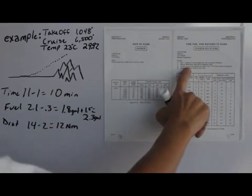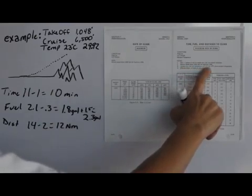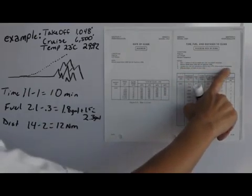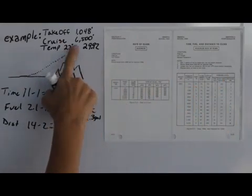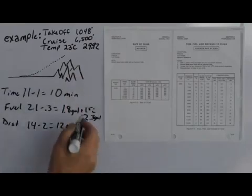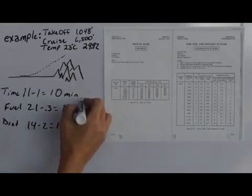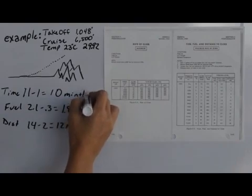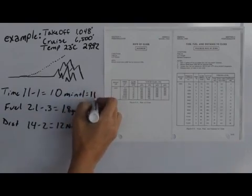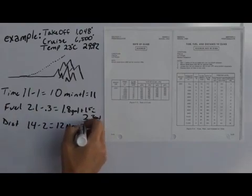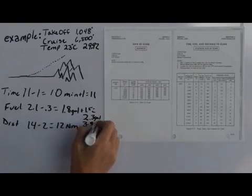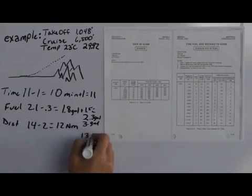Next it says increase the time, fuel, and distance by 10% for each 10 degrees above standard. And remember, our standard was 13, but in our example it's 23, so we are plus 10 degrees, so therefore we would have to add 10% to each one of these. So if we add about 1, it would be 11 for our time, and for our fuel we'd make it about 3 gallons, and our distance we'd add 1.2, so you might as well call it about 13 nautical miles.